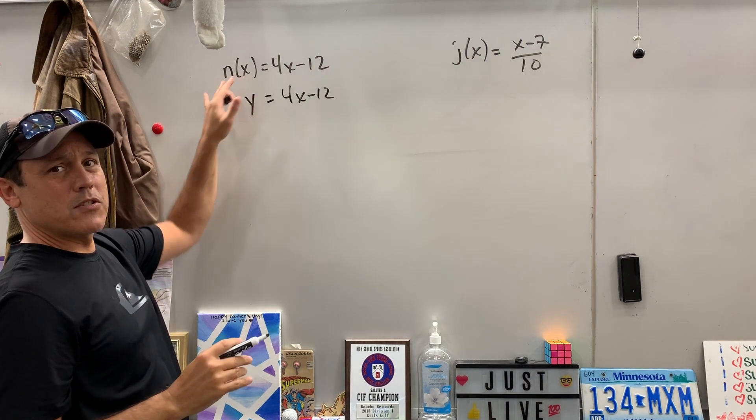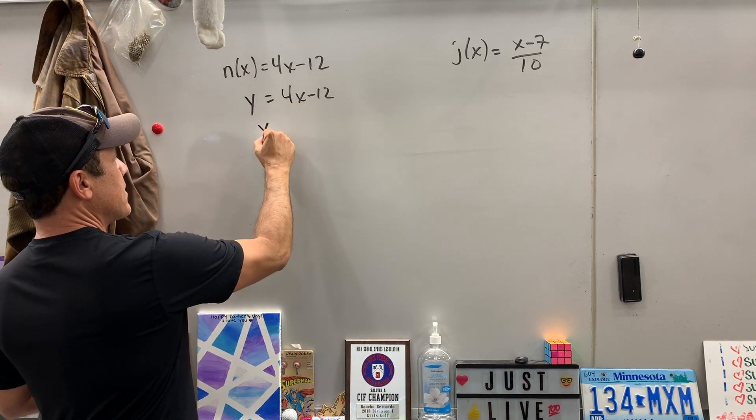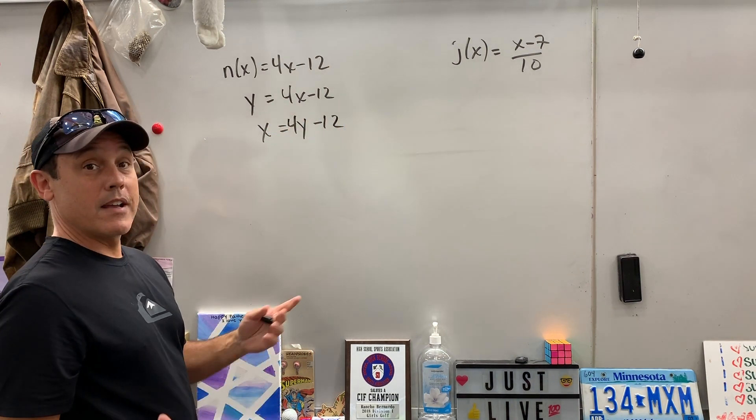Whenever this is changed to y, you'll understand here in a second. All you need to do is flip-flop the x and y. Oops, 4y minus 12. And then go ahead and solve for y.